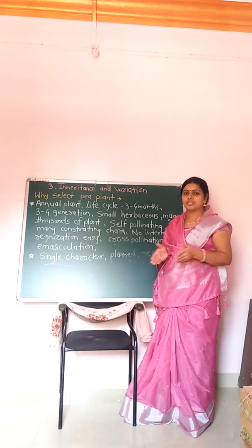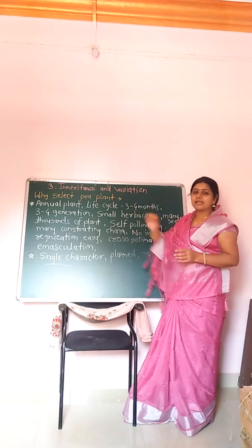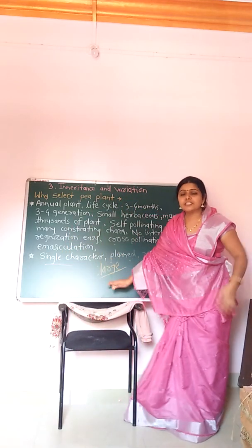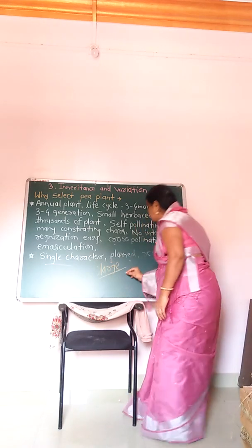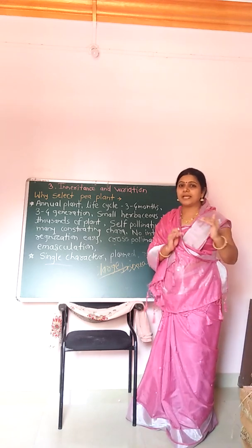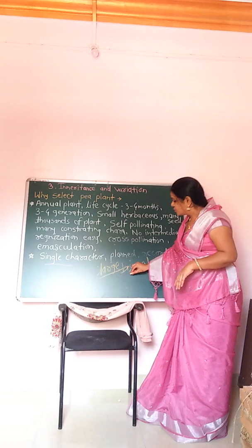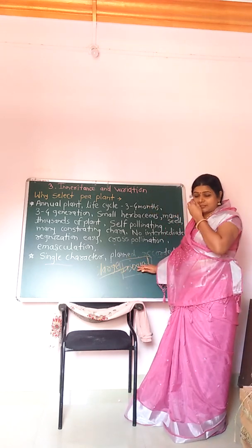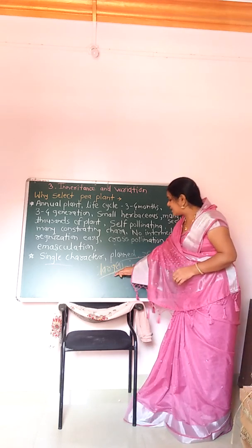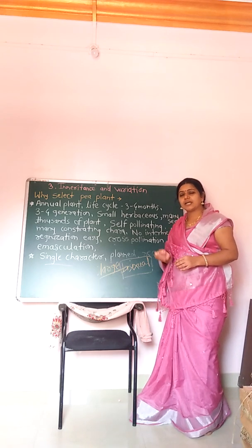Cross-pollination, or artificial pollination, can also be done on garden pea plants. This is possible because the garden pea plant has very large flowers, and these flowers are bisexual flowers. Bisexual means two sex organs — the male part and the female part — are present in one flower. The male part can be removed from the large bisexual flower to perform cross-pollination.